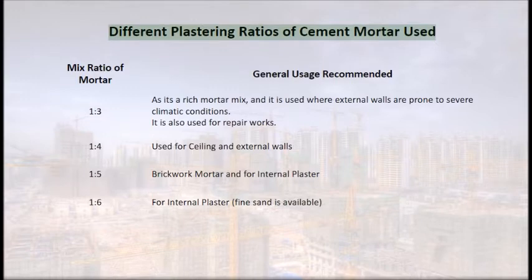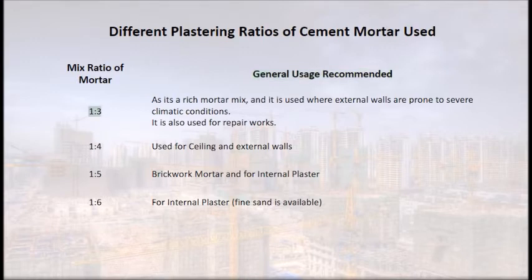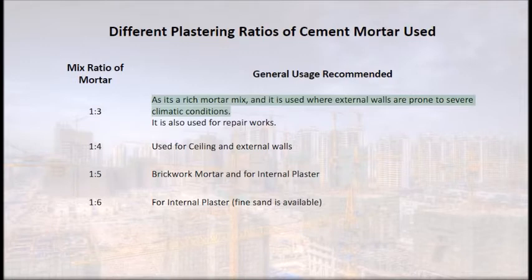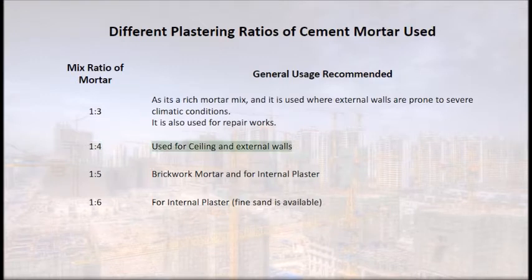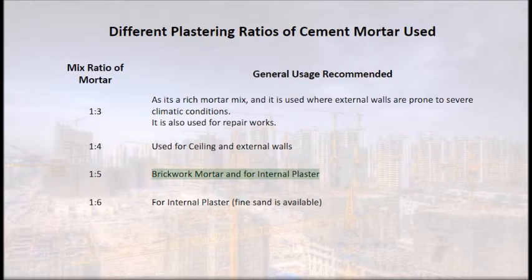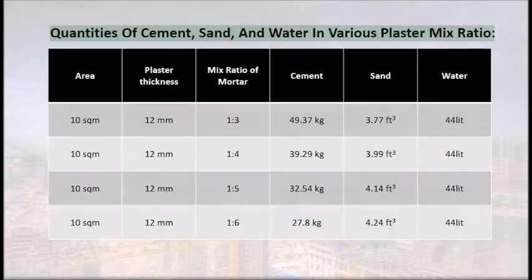Different plastering ratios of cement mortar used: Mix ratio 1:3 is a rich mortar mix used where external walls are prone to severe climatic conditions and also for repair works. 1:4 is used for ceiling and external walls. 1:5 is used for brickwork mortar and internal plaster. 1:6 is used for internal plaster where fine sand is available.